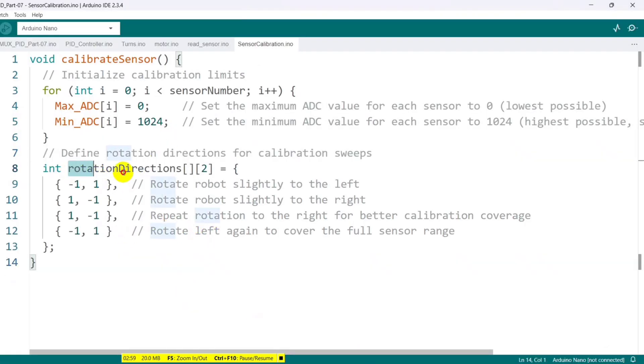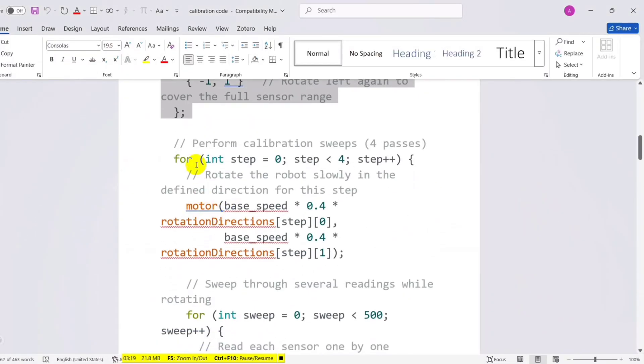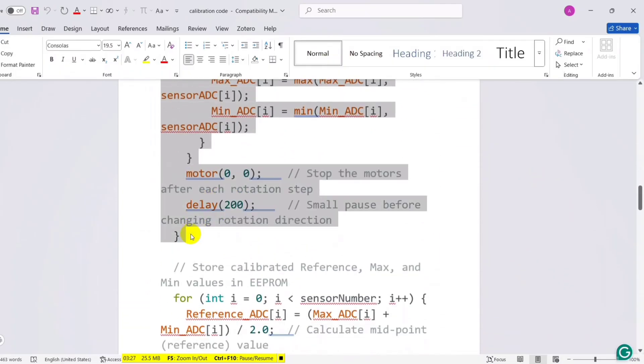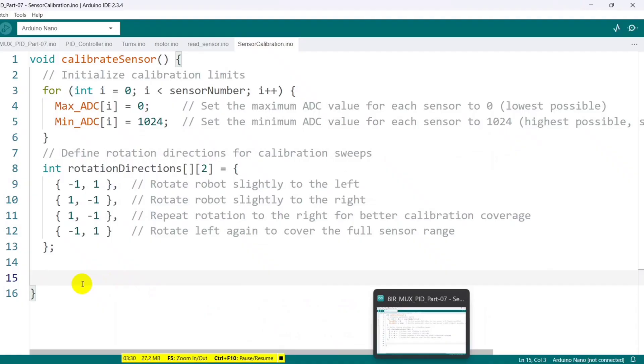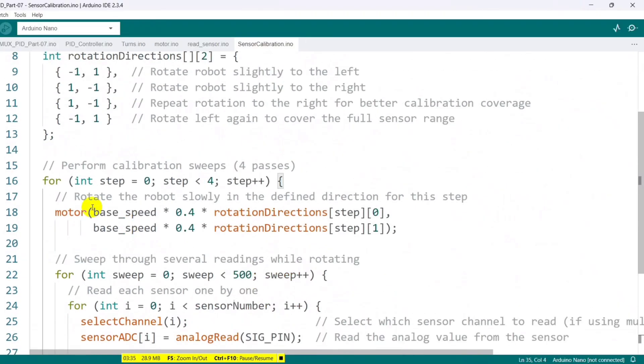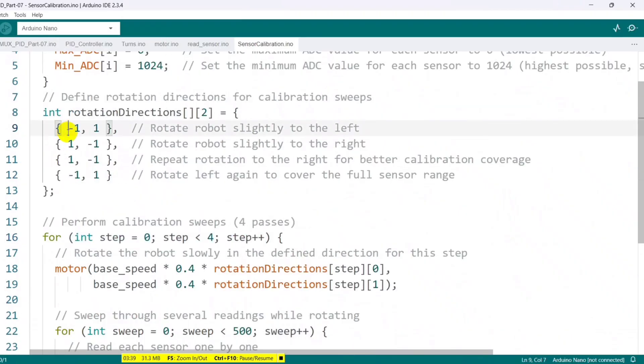Next, I define four directions for the robot's movement. After that, I insert the part of the code that moves the robot and takes sensor readings as it moves from left to right.